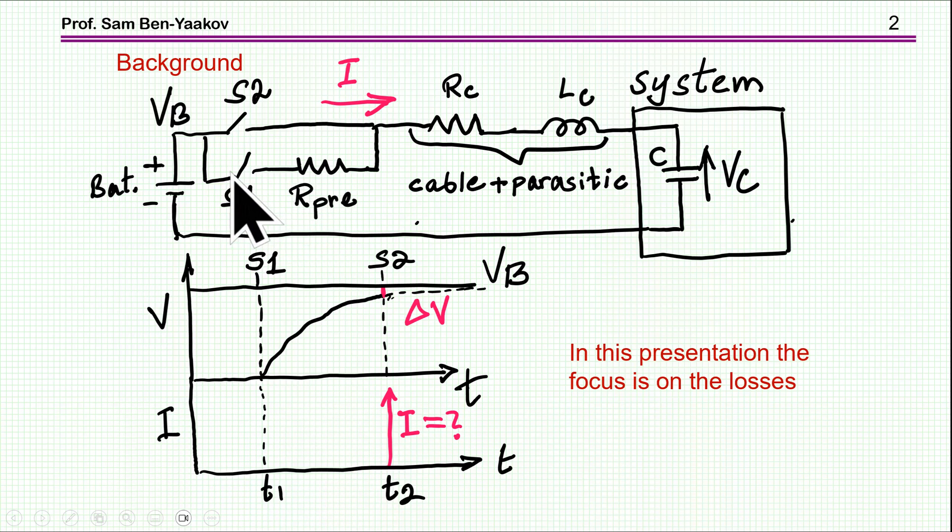So to ease the charging process, we usually use a precharger. That is, we have another switch with a resistor that is charging the capacitor in a slower rate. Here I'm showing the voltage on the capacitor after S1 is turned on, and then after a while, at a given time that we decide on, we turn on S2. And this will be under some voltage. We don't want to wait too long, so a decision is made as to a given point we're going to connect it.